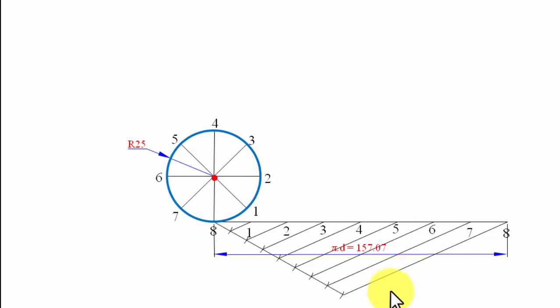Let's name them one by one. But the string length in reality is not 157.07. The string length is 165, so you need to keep the zero of your scale over here.